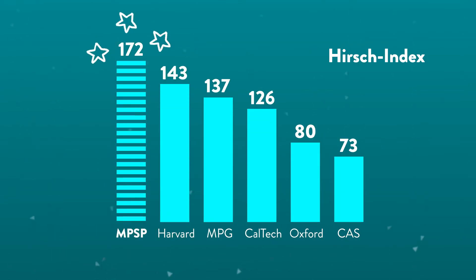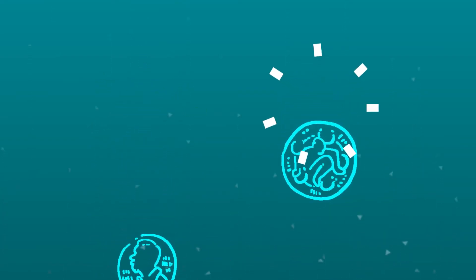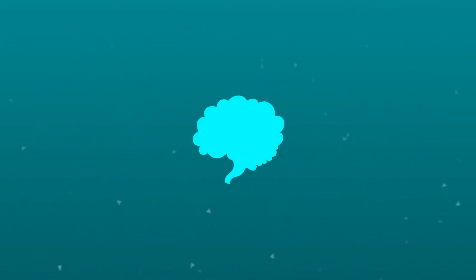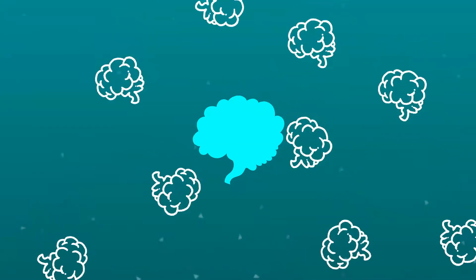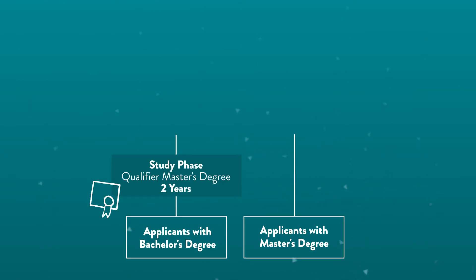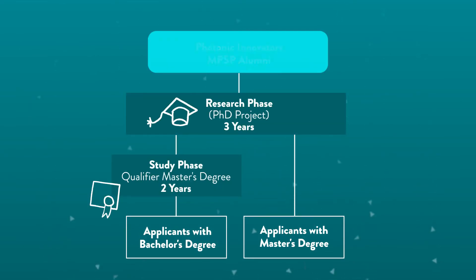Amongst our fellows we have winners of the Nobel Prize, Otto Hahn Prize, the German Zukunftspreis, and many more. By joining our school you'll have access to these brilliant scientists and their highly renowned research institutions. The fellows train you during your two-year study phase and offer scientific exchange and supervision for your PhD project in the three-year research phase.